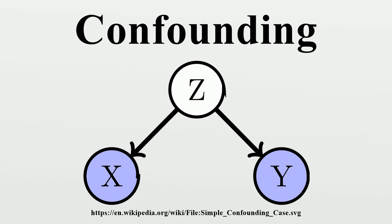Where the conditional probability upon seeing x equals x is considered, intuitively this equality states that x and y are not confounded whenever the observationally witnessed association between them is the same as the association that would be measured in a controlled experiment with x randomized in principle. The defining equality p equals p can be verified from the data-generating model, by simulating an intervention do and checking whether the resulting probability of y equals the conditional probability p. Graph structure alone is sufficient for verifying the equality p equals p, which is guaranteed to hold whenever x and y do not share a common ancestor.